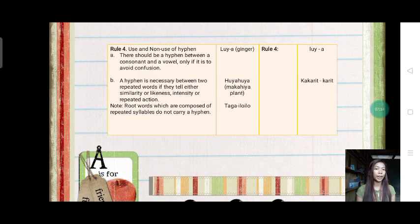Letter b. A hyphen is necessary between two repeated words if they tell either similarity or likeness, intensity, or repeated action. Note, root words which are composed of repeated syllables do not carry a hyphen. The example here is huya-huya. In Hiligaynon, makahiya. So salihiya ka word.